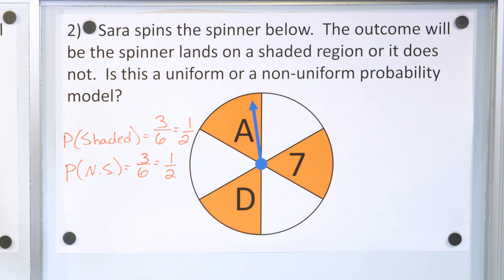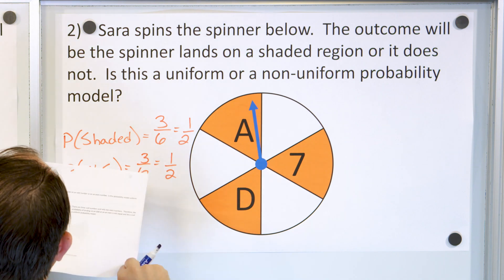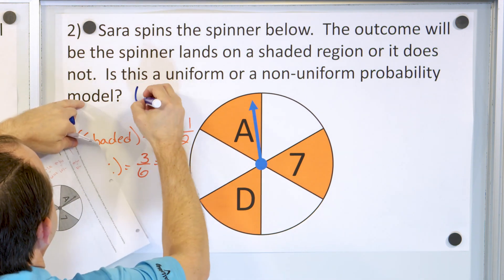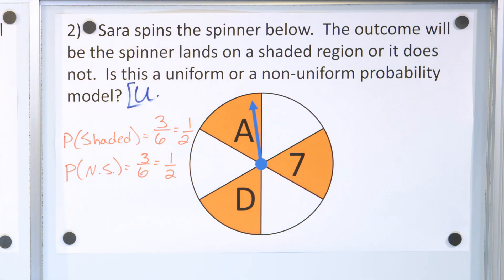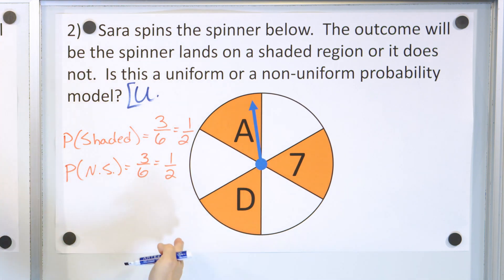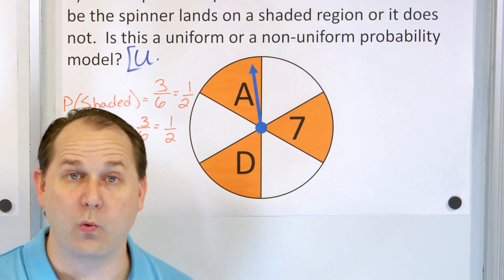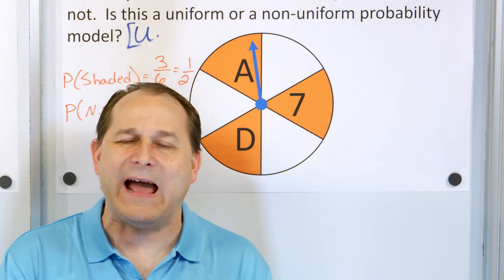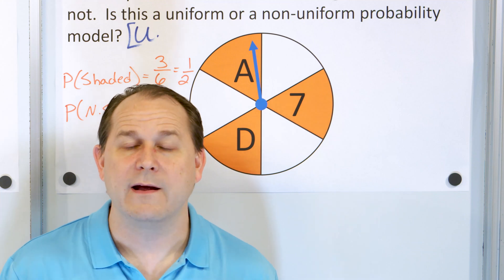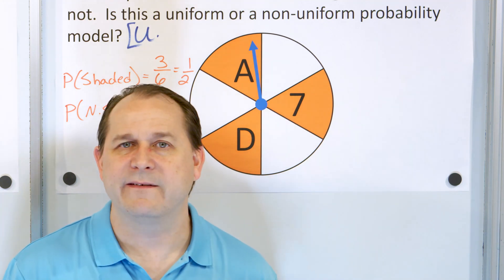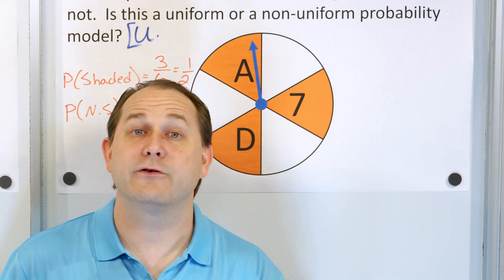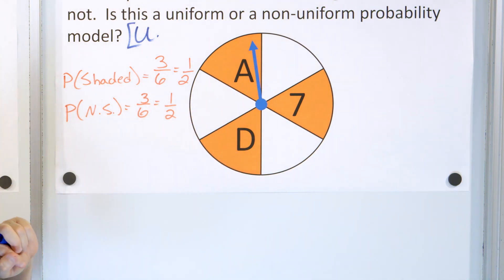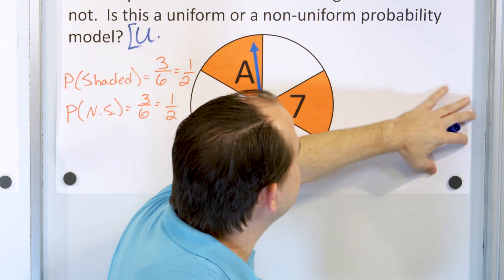Is this a uniform or non-uniform model? This one is uniform — a uniform probability model — because the outcomes are the same likelihood. Notice that if you take one-half plus one-half, the two possible outcomes, one-half plus one-half comes out to one. We should always be able to add all of the probability outcomes and they should all come to one, because when you spin this, you're going to get either a shaded region or not with 100% likelihood. It's a good double check to make sure your work is correct.